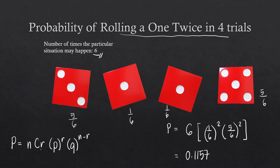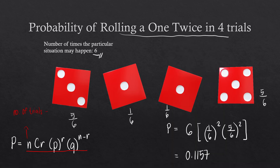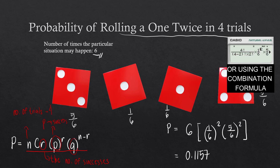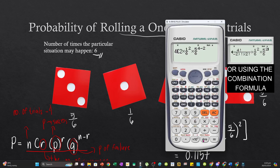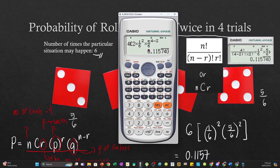Going back, let's solve using the formula. N is 4, combination R is 2, times the probability of success (1/6) to the power of 2, multiplied by the probability of failure (5/6) to the power of N minus R, which is 4 minus 2 equals 2. Pressing equals, we get the same value: 0.1157. This is how you apply the formula of binomial distribution.